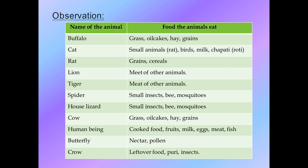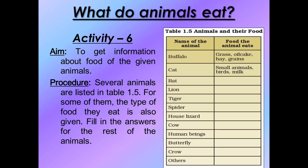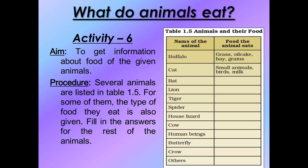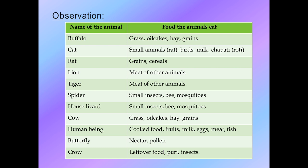Butterfly eats nectar and pollen - we have already discussed this. Nectar is a sweet fluid found in flowers, and pollen refers to the tiny powder-like grains found inside flowers - yellowish or white-colored powder. So butterfly's food is completely plant-based. Crow eats leftover food - which could be both meat and plant material like vegetables, fruits, chapati, and also insects. So crow eats both types.